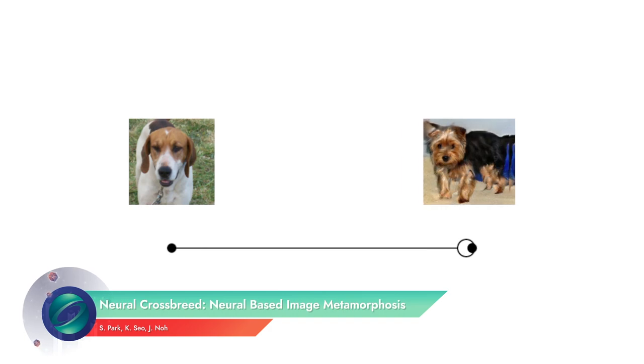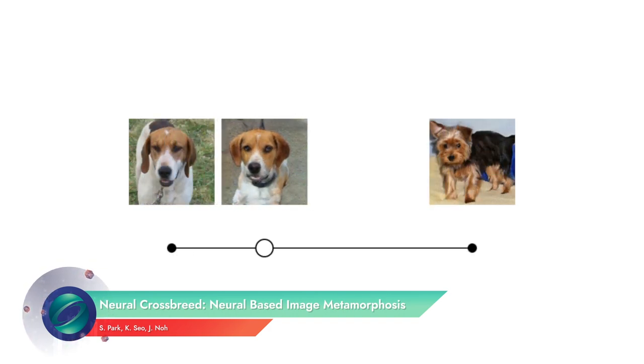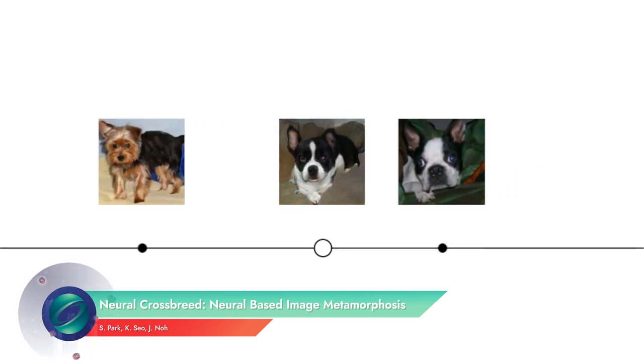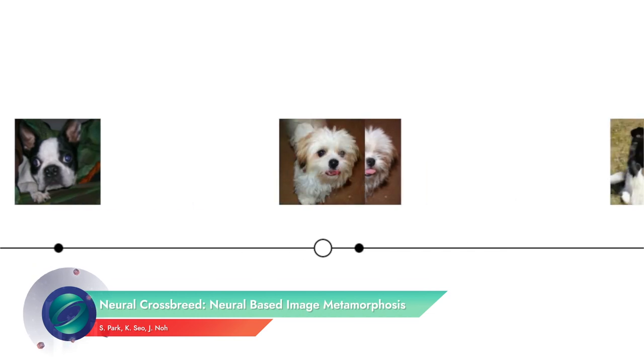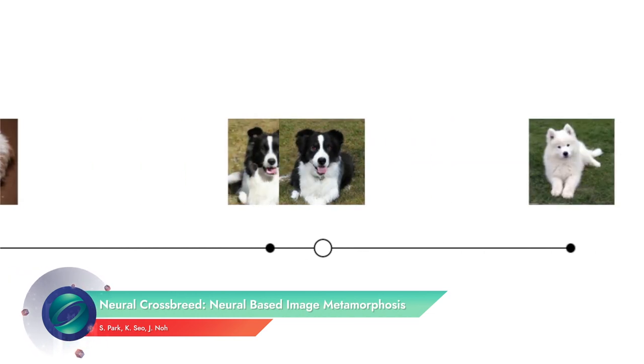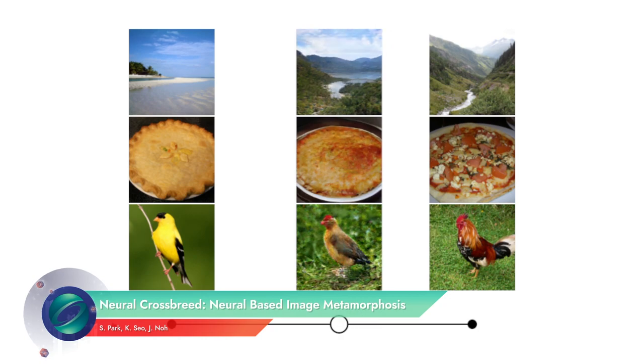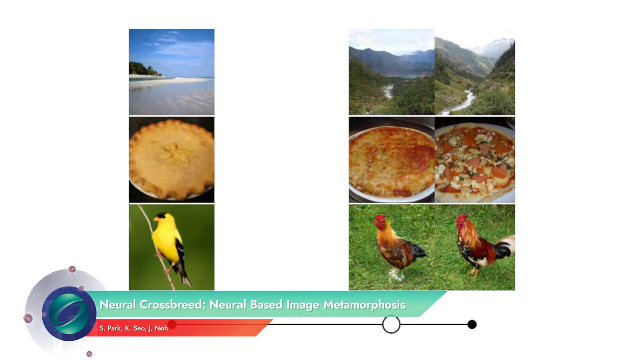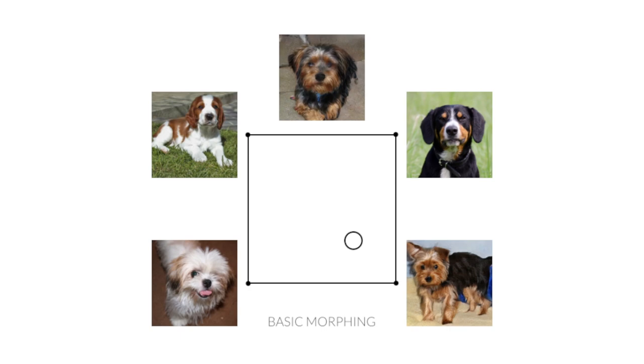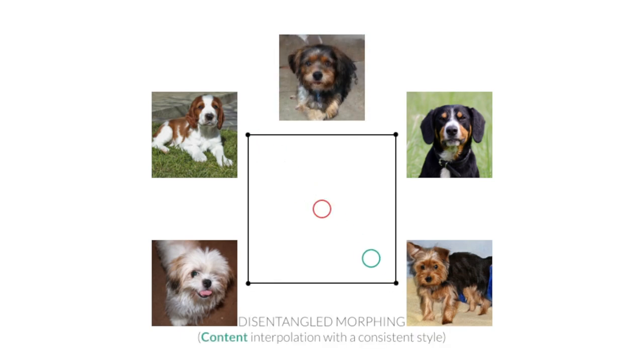Even if you don't have a dog, you're going to love this new neural network called Crossbreed. This system creates a morphing effect by learning a semantic change of input images, and it's able to produce a sequence of meaningful intermediate frames without requiring the user to specify explicit correspondences. Does this network know your dog?